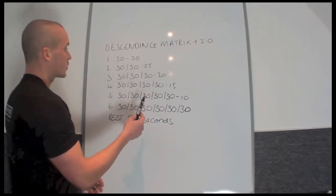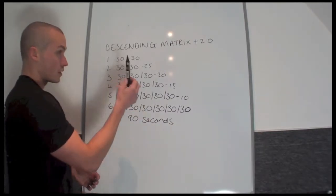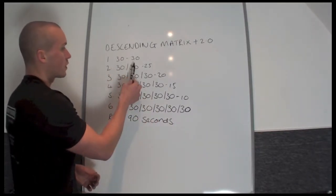Very similar to the Descending Matrix, you've got six rounds and the work periods are the same. So you've got 30 seconds work, 30 rest.